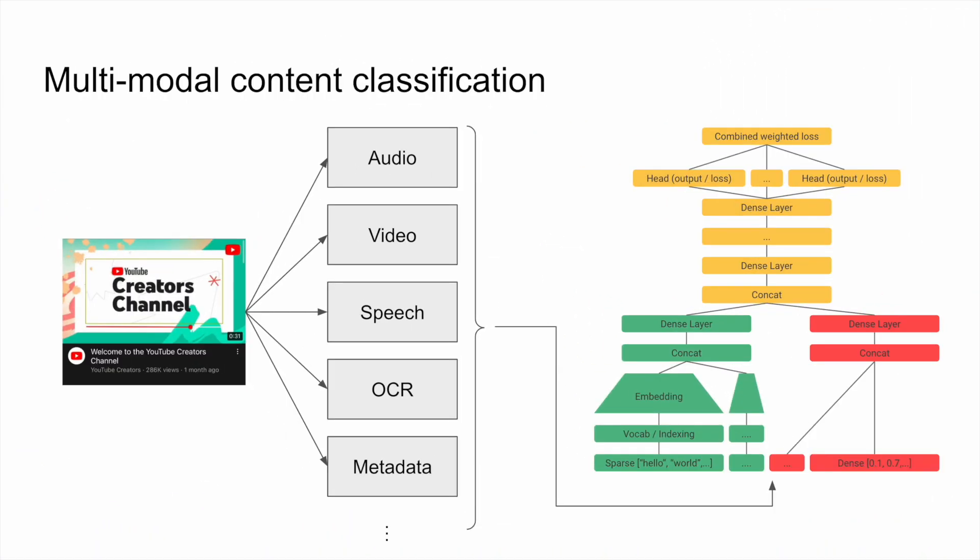Now let's take a look at multimodal content classification. A video is composed of multiple signals, including audio, video, speech, OCR, metadata, logos, and more. These signals are fed to modular blocks that transform them into a canonical vector format so that they are concatenated and fed to the rest of the network, which produces the final risk assessment.